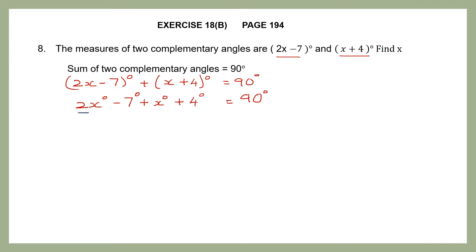I am going to take only the x terms. I have 2x degrees here and 1x degrees here, so 2x plus 1x gives 3x. Then I take my whole numbers: minus 7 and plus 4. The signs are different, so I put the sign of the bigger number — which is minus — and subtract: 7 minus 4 gives 3. So I have minus 3. Therefore, 3x degrees minus 3 degrees equals 90 degrees.